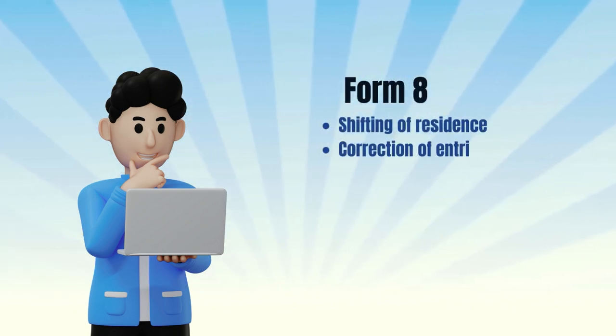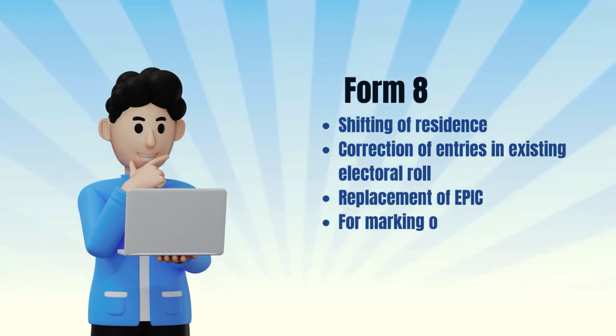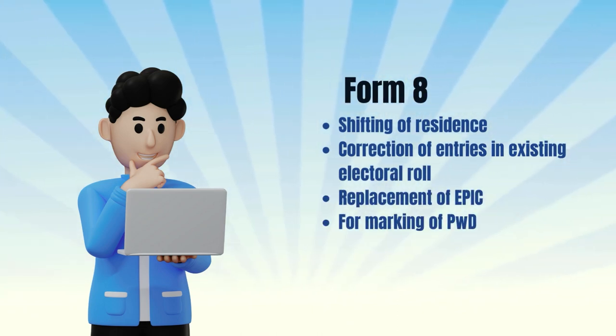Form 8 is for shifting of residence, correction of entries in the existing electoral role, replacement of EPIC, and for marking of PWD.